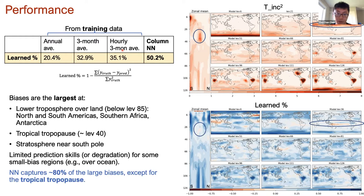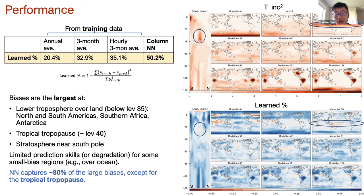The upper right shows the squared target temperature increments for different model levels. The largest areas are in the lower troposphere over land, the tropical tropopause, and the stratosphere over Antarctica. The bottom shows the learned percentage: blue means the prediction captures the target output, red means the prediction makes the bias worse. Although prediction skills are limited for some regions, the neural network captured around 80% of these large-biased regions, except for the tropical tropopause.